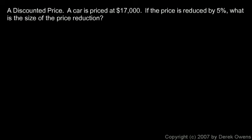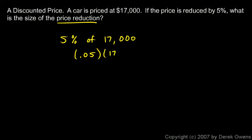Here's an example involving a price discount. A car is priced at $17,000, and the sellers want to go ahead and sell it, so they're willing to reduce the price by 5%. What is the size of the price reduction? That will be 5% of the original price. So I calculate 0.05 times $17,000, and that comes out to $850. So the price is reduced by $850.